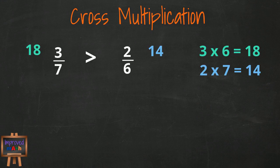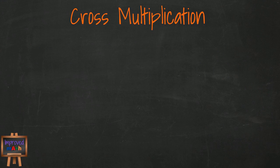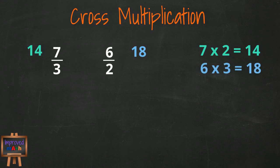Now you may be wondering, does cross multiplication work for improper fractions? Yes, it does. Let's look at 7 thirds compared to 6 halves. 7 times 2 is 14, and 3 times 6 is 18. 6 halves is greater than 7 thirds.